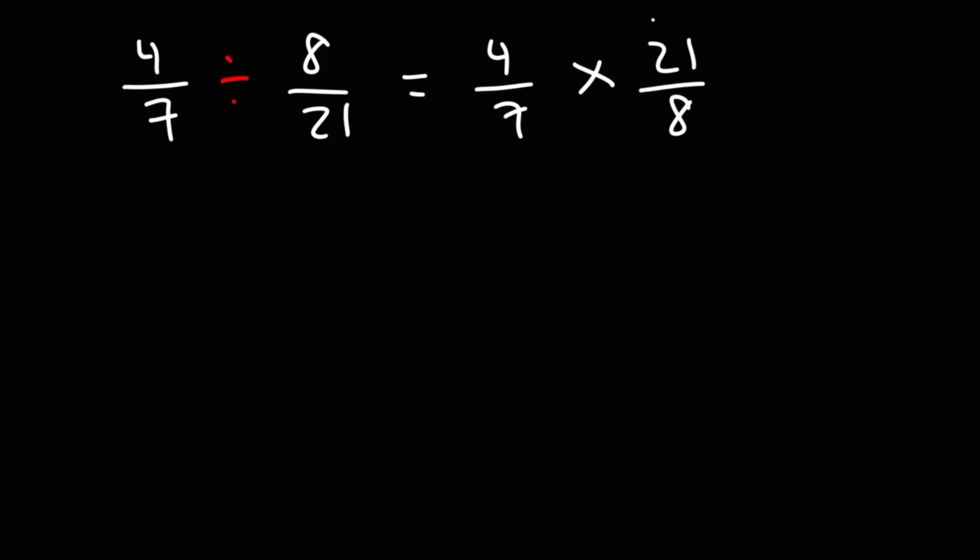Now we can multiply across, but 4 times 21 is going to give us a big number. Instead, we want to multiply these two fractions using the cancellation method. So let's break down 21 into smaller numbers, that is 7 times 3, and 8, let's break that into 4 and 2.